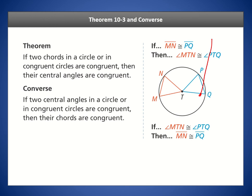Theorem 10-3 states that if two chords in a circle are congruent, then their corresponding central angles must be congruent. The converse is also true: if the central angles are equal, say 50 degrees, then their corresponding chords must be congruent.